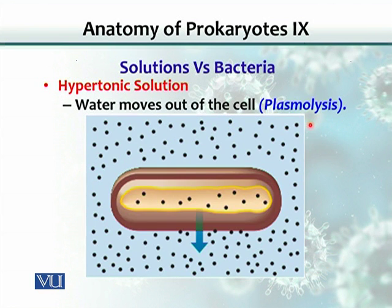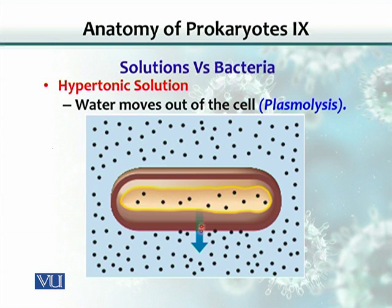On the other hand, if the solution surrounding the bacterium has higher osmotic pressure than the cytoplasm — a hypertonic solution — the higher solute concentration outside will attract water out of the cell. When water leaks out, the cell shrinks, and this is called plasmolysis.